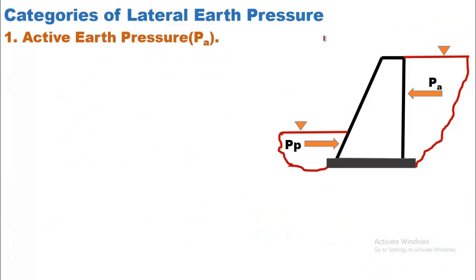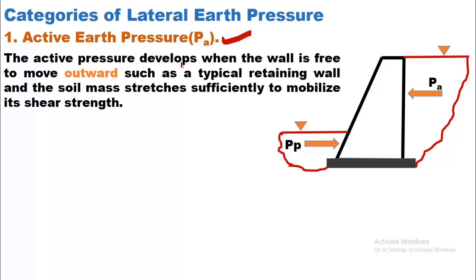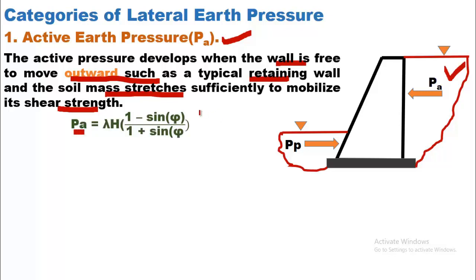The first type of earth pressure is active earth pressure. Active earth pressure develops when the wall is free to move outward, such as a typical retaining wall, and the soil mass stretches sufficiently to mobilize its shear strength. The backfill material can be water, soil, or a combination of earth, stone, rocks — whatever material the retaining wall is built to retain. Active earth pressure tends to move the wall away from the soil, or outward, and it is denoted by PA.